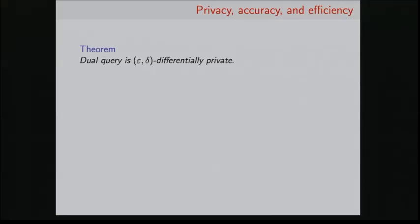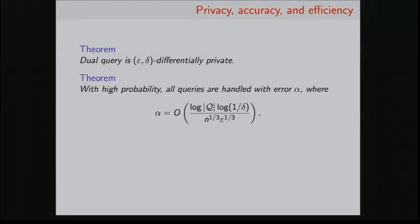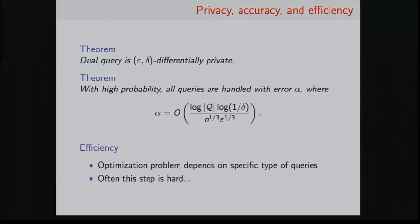So just some theorems. Our dual query algorithm does satisfy differential privacy. Also, it has an accuracy guarantee. So with high probability, we'll answer all the queries with error alpha. Alpha is like this quantity. I want to stress that this error is not state-of-the-art. There's better algorithms that have better-known guarantees. However, the strength of our approach is that we've factored our algorithm in a different way so that we can apply different tools to see whether we can get better performance in practice. But this result is nice, but it's not really the best known.